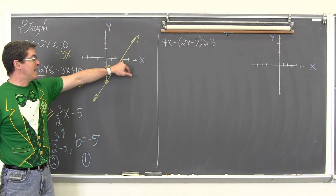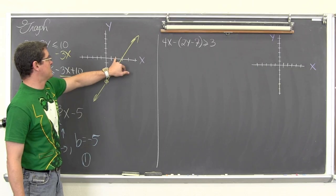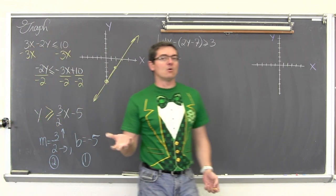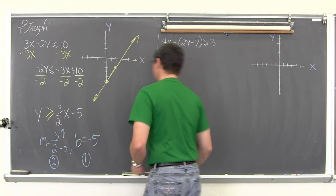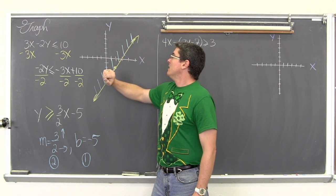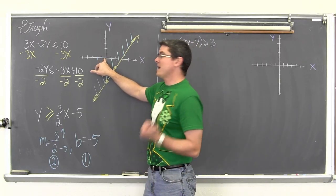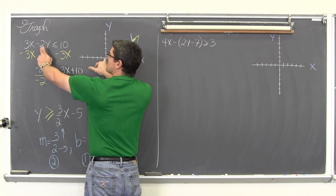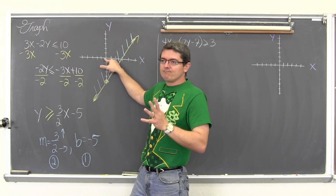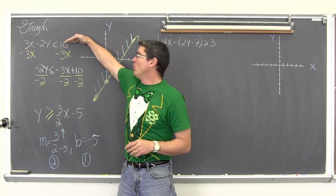Just for clarity, the line doesn't cross the x-axis at exactly 3 — that is just my hand-sketching. Since we have y is greater than or equal to, and y values get greater as you move up the y-axis, our shading is going to be above that solid line. Any point in the shaded area should be a solution. Let's quickly check the point (0, 0): 3 times 0 minus 2 times 0 equals 0, and 0 is less than or equal to 10 — so yes, all points in the shaded region make the original inequality true.